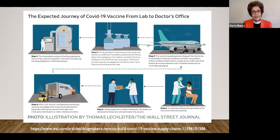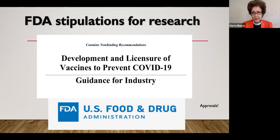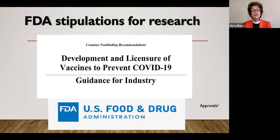So you have a picture of this whole very complex, very long, very involved process of vaccine production. Before I finish, I want to mention some FDA stipulations for research, available on their webpage. There is a document — a guidance for industry — with all the very specific tenets, stipulations, and rules of the game for the development and licensure of vaccines.